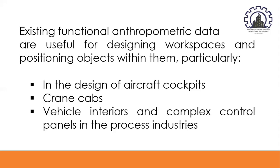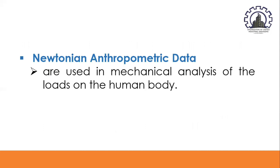Newtonian anthropometric data are used in mechanical analysis of the loads on the human body. The body is regarded as an assemblage of linked segments of known length and mass, sometimes expressed as a percentage of stature and body weight. Ranges of appropriate angles subtended by adjacent segments are given to enable suitable ranges of working postures to be defined, enabling designers to specify regions of the workspace where displays and controls may be most optimally positioned.